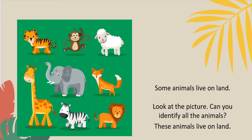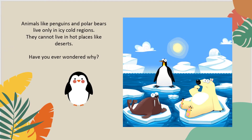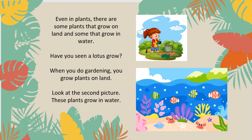Some animals live on land. Look at the picture — can you identify all the animals? These animals live on land. Fishes and other sea creatures live in water. Animals like penguins and polar bears live only in icy cold regions. They cannot live in hot places like deserts. Have you ever wondered why? There are also some plants that grow on land and some that grow in water. Have you seen a lotus grow?